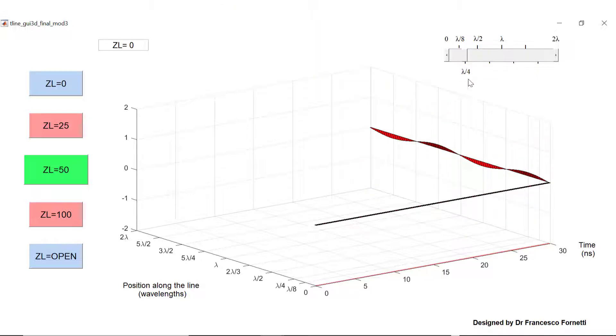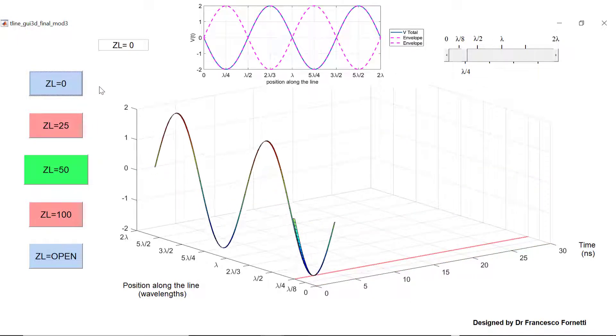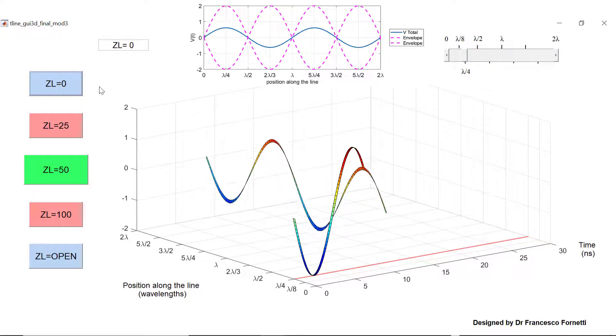The voltage observed a quarter of a wavelength down the line will instead be a much larger amplitude and in fact the maximum that we will observe at any point along the line.